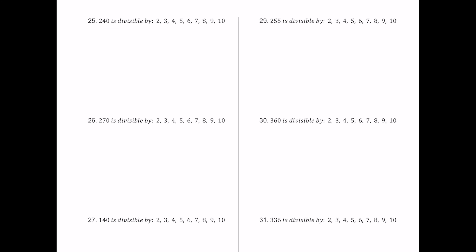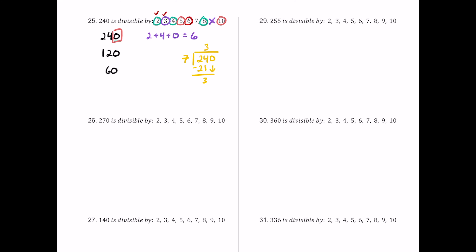For number 25, we have 240. It ends in 0, so 2 works. Half is 120 — still even — so 4 works. Half of 120 is 60 — still even — so 8 works. The digit sum 2 plus 4 plus 0 is 6, a multiple of 3 but not 9. Since 2 and 3 work, 6 works. It ends in 0, so 5 and 10 work. Dividing 240 by 7 leaves a remainder, so 7 fails.